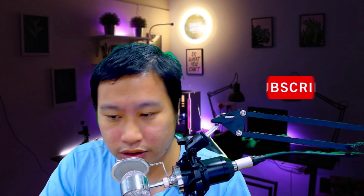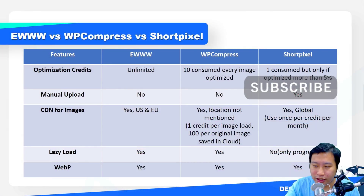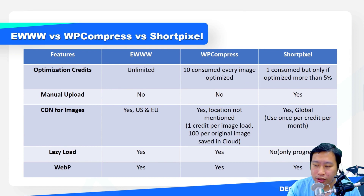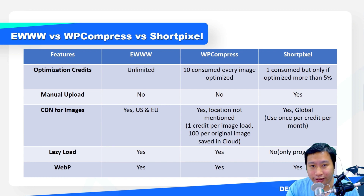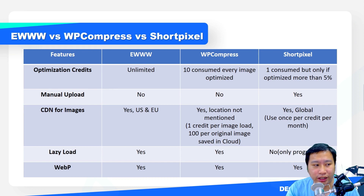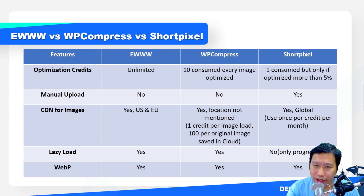Let's dive into these different plugins. I've already done the comparison between these three tools. For Ewww Image Optimizer, the optimization credits are actually unlimited — you can get any plan they have and optimize unlimited images. They do have a soft cap of 25,000 images, but whenever you go above that, you can always reach out to support and they can lift that limit for you.